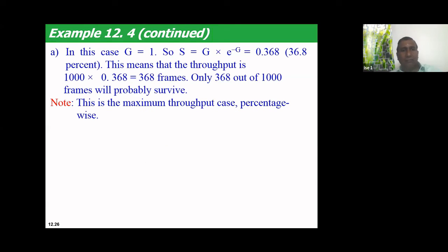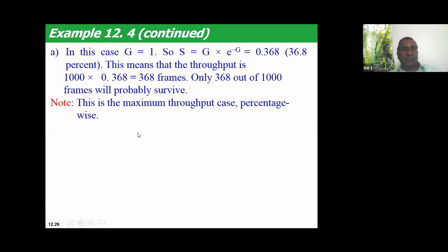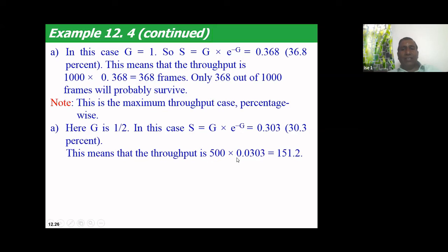With G = 1, S = e^(−1) = 0.368, so 1000 × 0.368 = 368 frames per second reach the destination. This is greatly improved compared to Pure ALOHA. For 500 frames per second, S = G × e^(−G) = 0.303, which is 30.3%, so roughly 151 frames per second survive.